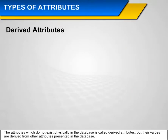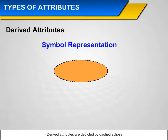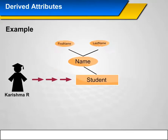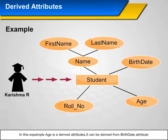Derived Attributes: Attributes which do not exist physically in the database are called derived attributes, but their values are derived from other attributes present in the database. Symbol Representation: Derived attributes are depicted by a dashed ellipse. Example: Age is a derived attribute — it can be derived from the date of birth attribute.